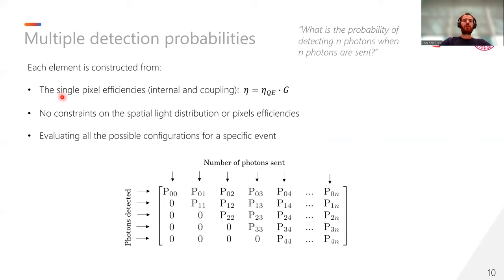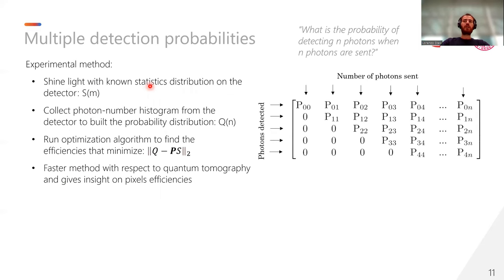We developed a mathematical model that is able to describe all of these probability elements, and each element is constructed by using only the single pixel efficiency. And by efficiency, I mean both the product from the internal quantum efficiency and the geometrical coupling between the fiber and the pixel inside. In such a way, we do not put any constraint on the spatial light distribution and neither on the pixel efficiency. Therefore, we take into account different illumination for each pixel and also take into account possible non-uniformity that are happening during the nanofabrication process that can lead to different internal quantum efficiencies between the pixels. Lastly, we evaluate all the possible configurations for a specific event, hence how many photons can end up on which pixel and which pixel is going to absorb the photons generating the click.